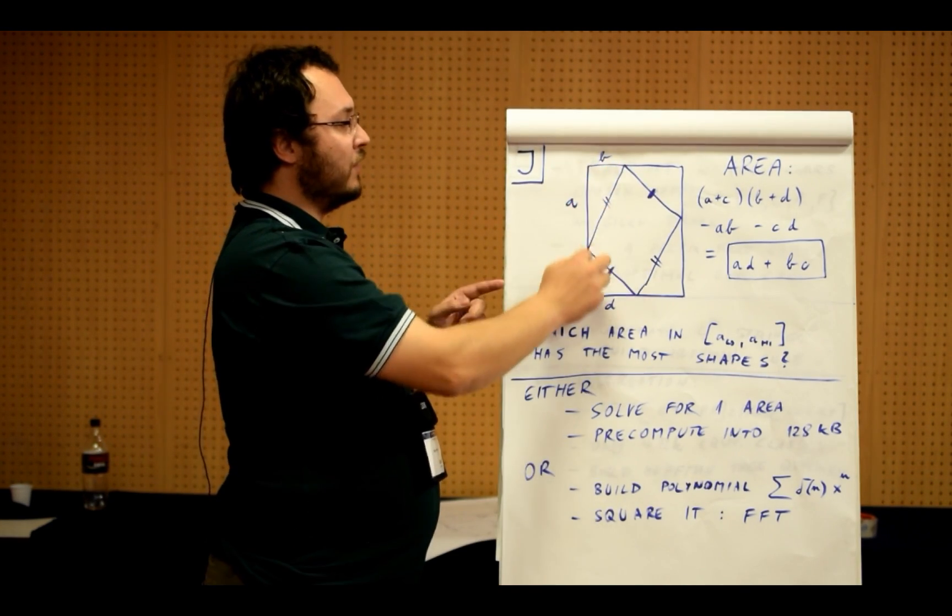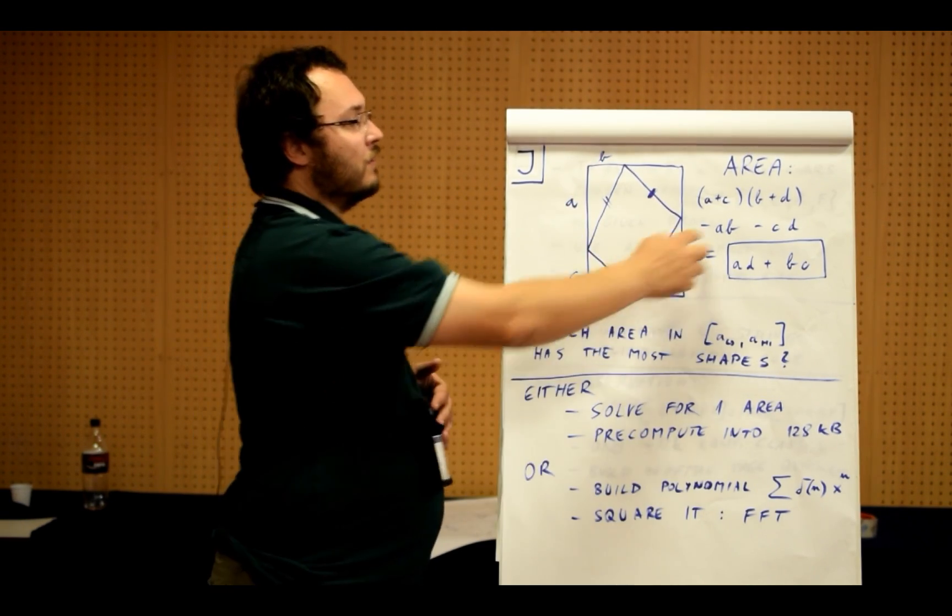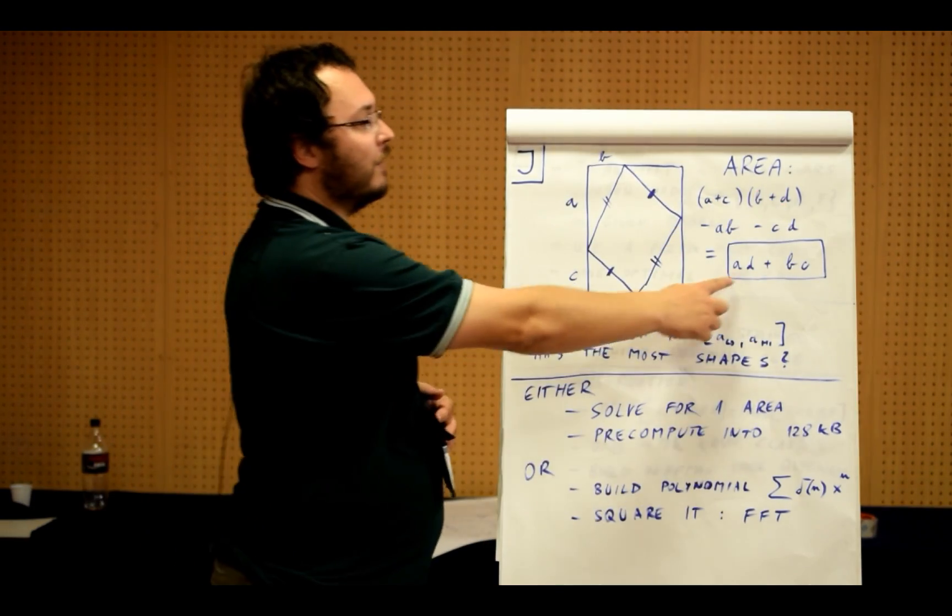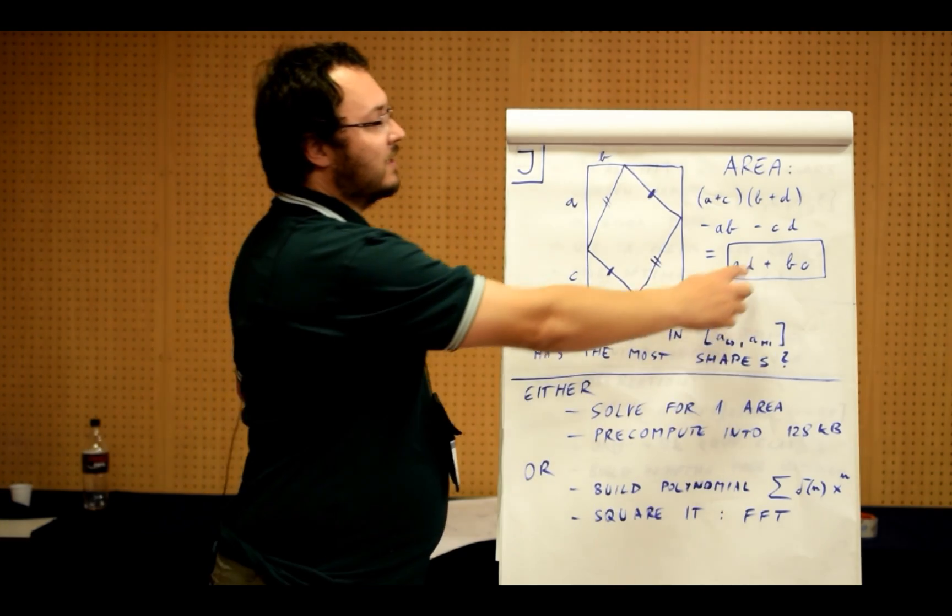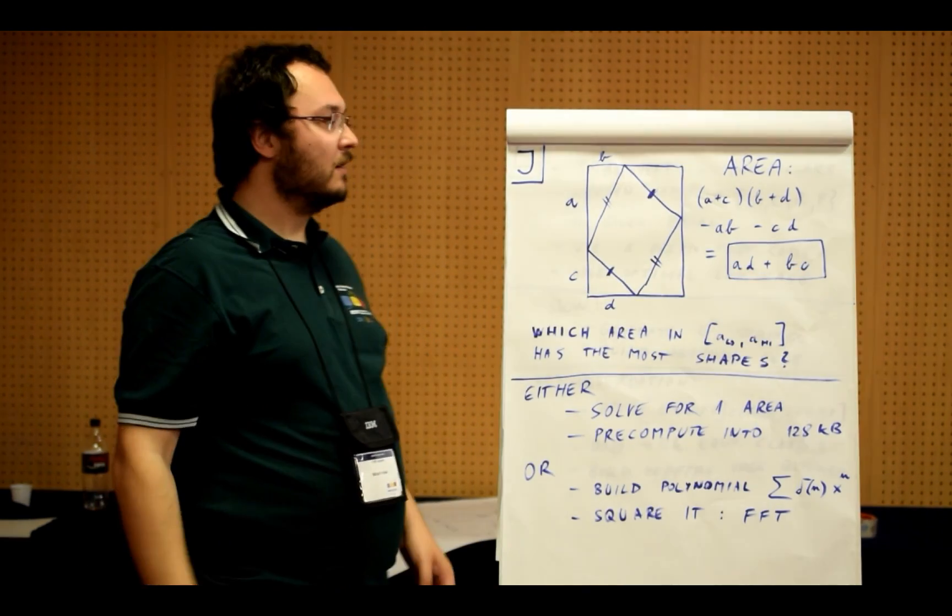So this triangle and this triangle are both a times b over 2, so this is minus ab, and then minus cd for these two triangles. So we are left with the following formula: the area of the tile is the sum of two products, a times d plus b times c.